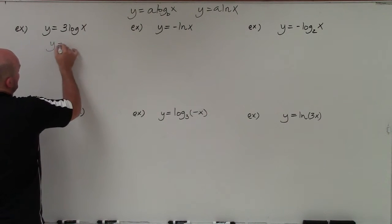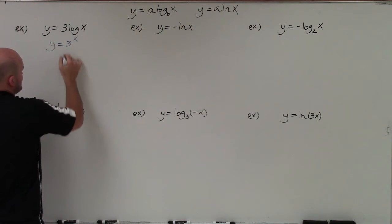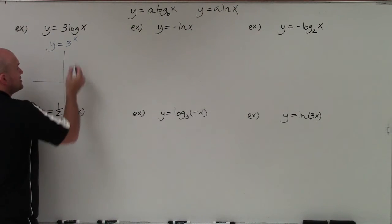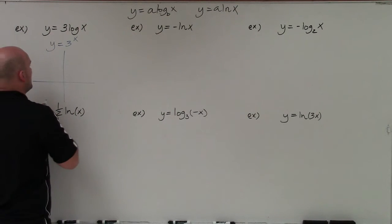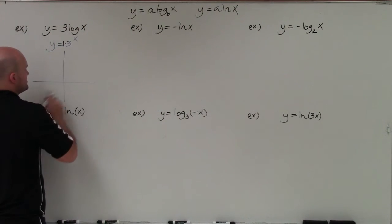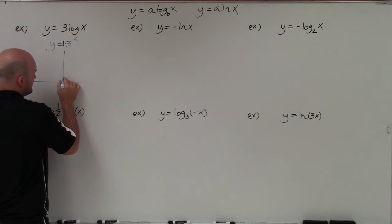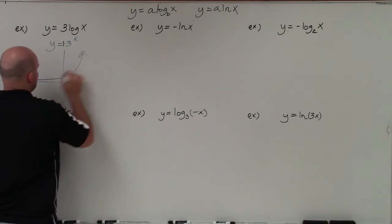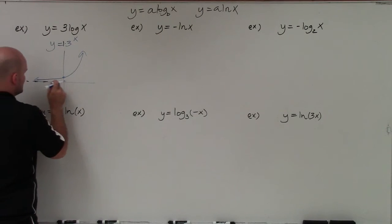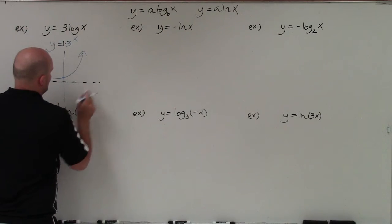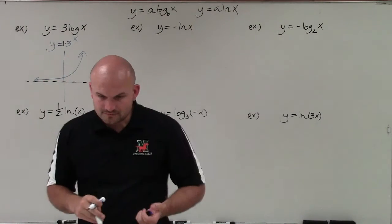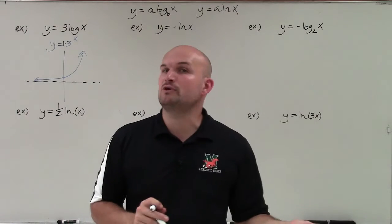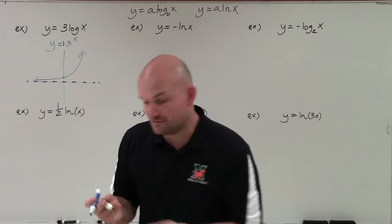If you remember when we were graphing the exponential equation, we always crossed at our a, which in this case was 1. The graph has a nice little asymptote. In my previous video, I talked about how exponential and logarithm equations are inverses of each other, which means they can be reflected about the y equals x line.